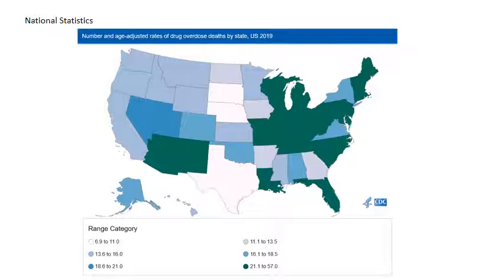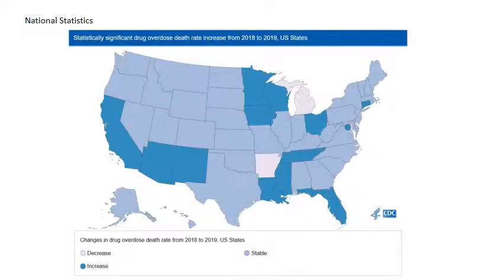This slide shows some national statistics — number and age-adjusted rates for drug overdose deaths, using 2019 data. The key point is that this is not a one-region problem; it is a problem across the United States — each and every state is involved. This slide also shows the change in drug overdose deaths from 2018 to 2019, demonstrating that changes are happening across states. Mississippi has also seen a significant increase in drug overdose deaths in the recent past.